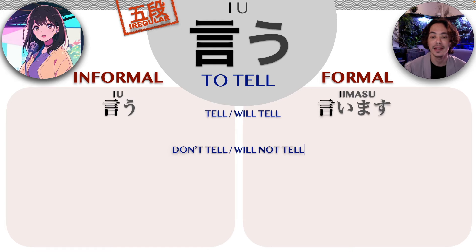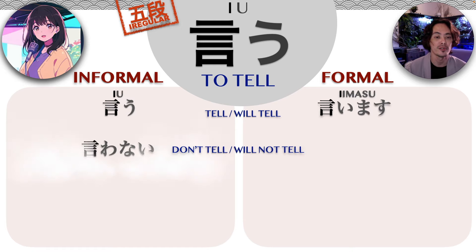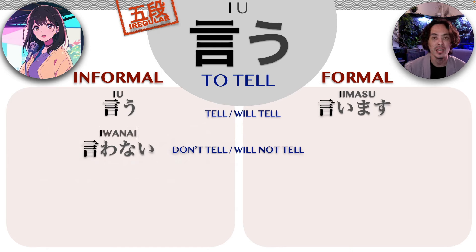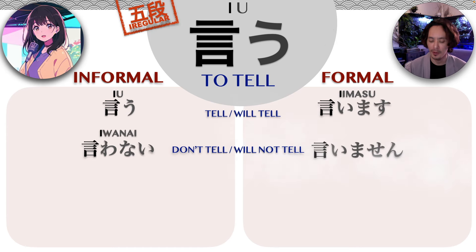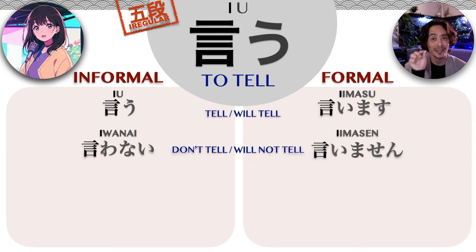The negative in the present and future for the informal will be iwanai — i, wa, na, i — iwanai. And the formal is iimasen, iimasen. So again, the i sound is a little bit extended.